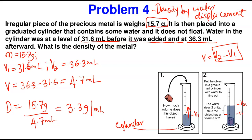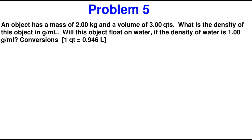The next problem says: an object has a mass of 2.00 kilograms and a volume of 3.00 quarts. What is the density in grams per milliliter? And will this object float in water if the density of water is 1.00 g/mL? First, we need to convert both units. Let's start by converting 2.00 kg to grams and 3.00 quarts to milliliters, since we need the density in g/mL.